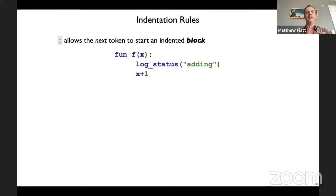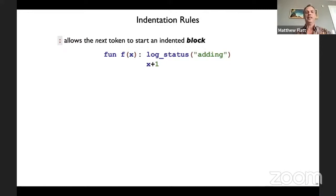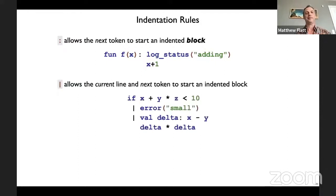The indentation for a block is two spaces by convention, but you can put as much indentation as you want and it doesn't matter. You can also start the block content on the same line if you want. Whatever token is after the colon — whether it's on the same line or not — determines the indentation for all the groups within that block. That's why 'x' really does have to be lined up under the 'l' here.